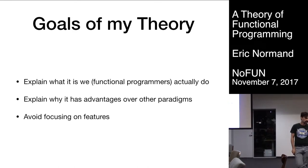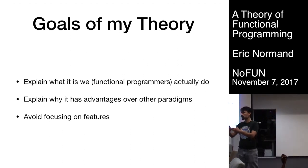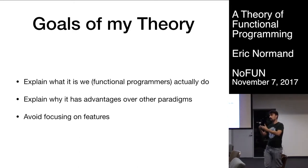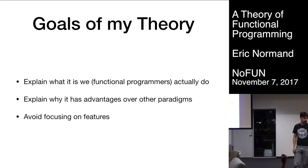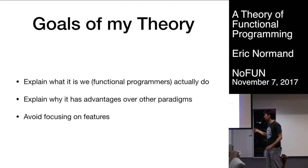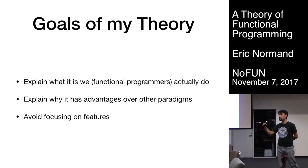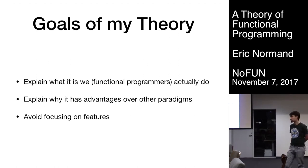So these are the two things I'm trying to answer: what is it, and why use it? My goals: when I explain what it is that we actually do — these definitions seem more pedagogical, trying to compare functional programming to object-oriented programming. OOP has mutable state, and functional programming doesn't like that, so it says no mutable state at all. That's a good way to show the difference, but not really a way to define it. I also want the theory to explain why FP has advantages over other paradigms, and I want to avoid focusing on features.